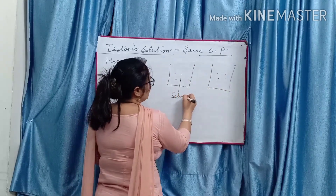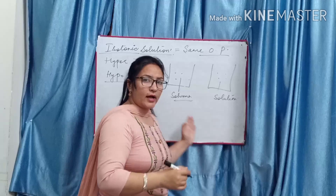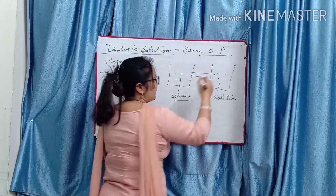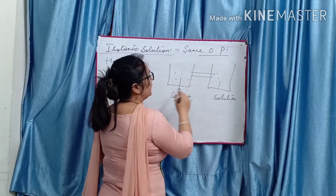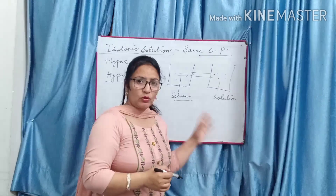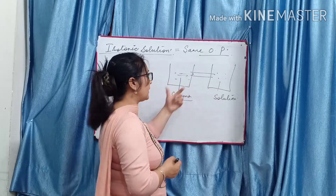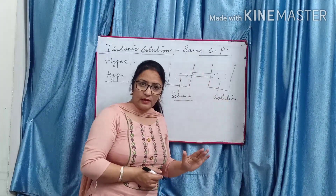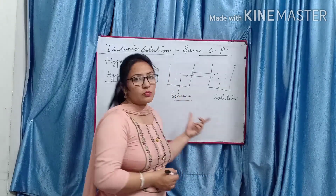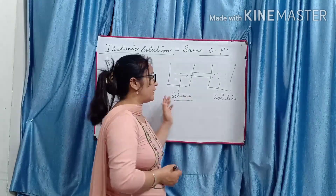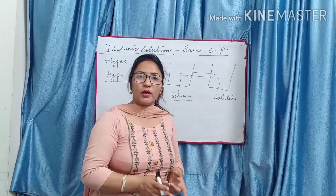Suppose one is a pure solvent and the other is a solution with lower osmotic pressure, separated by a semipermeable membrane. The solvent passes through the semipermeable membrane into the solution. When the concentration or osmotic pressure becomes the same on both sides, entry of solvent into the solution stops. Then what do we say? Isotonic solution.